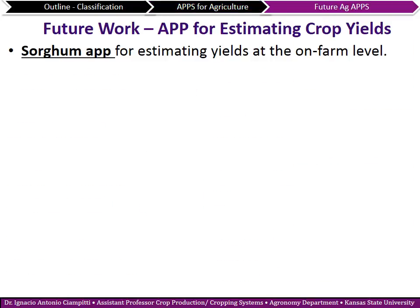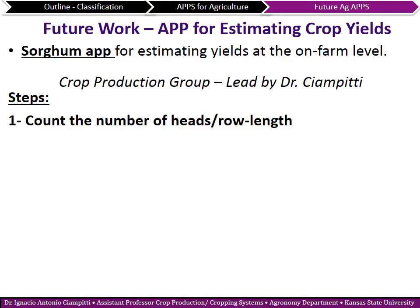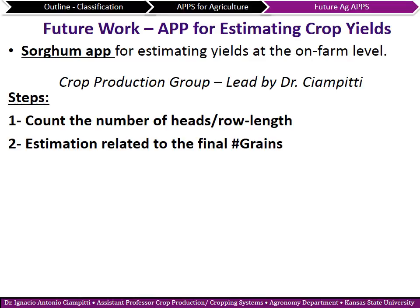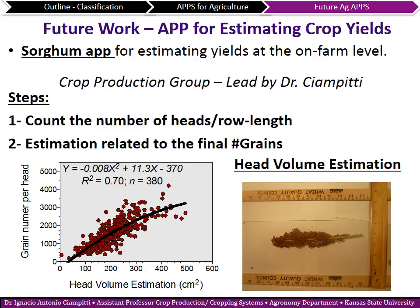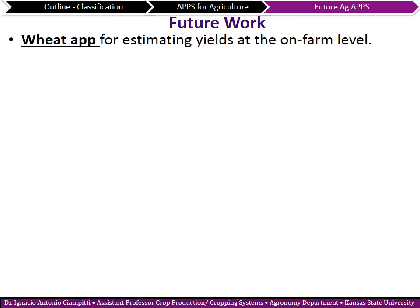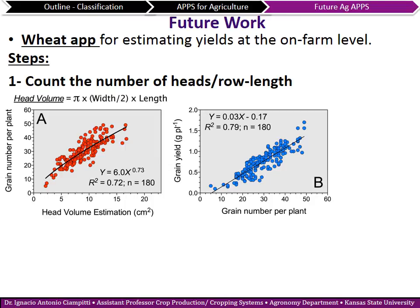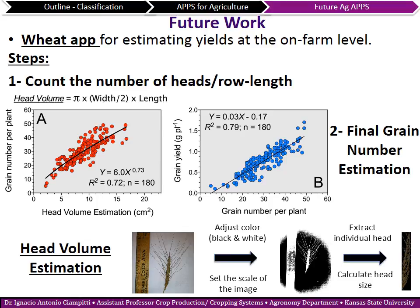Some things we're working on right now include a Sorghum Yield Estimation app. For farmers it's really hard to estimate grain number in sorghum — heads can have 2,000 to 4,000 grains. The approach we're exploring is correlating head size to grain number, since there's a nice correlation between head volume and grain number. We're working with an app to take pictures and estimate yields, similar to wheat — taking a picture of the head, calculating head size, and estimating grain number. Grain number is one of the main factors correlated to grain yield, so this estimation from pictures could provide yield estimates two to three weeks after flowering.